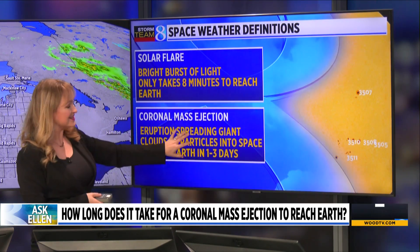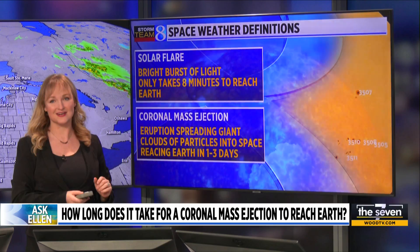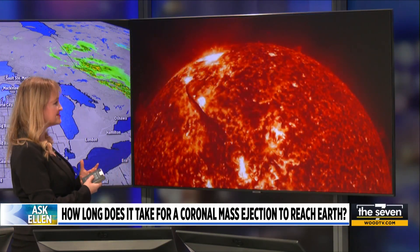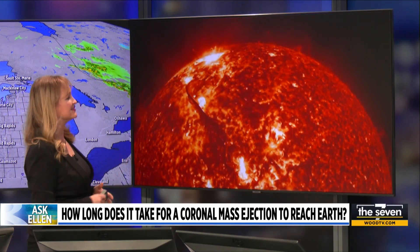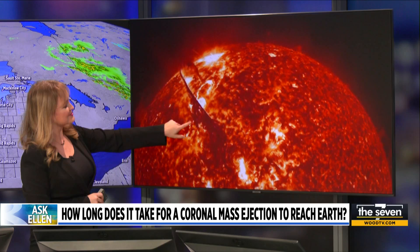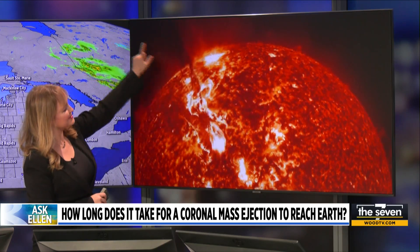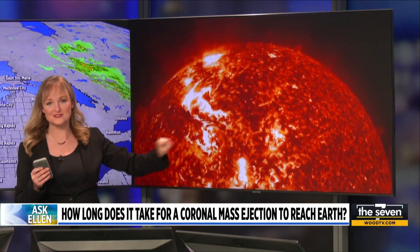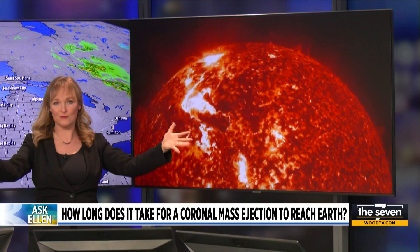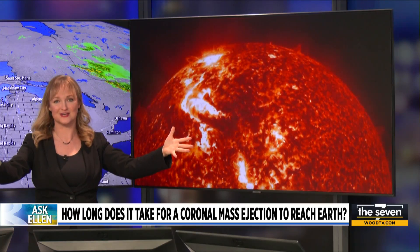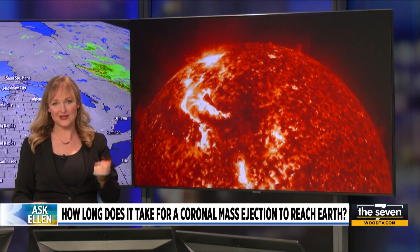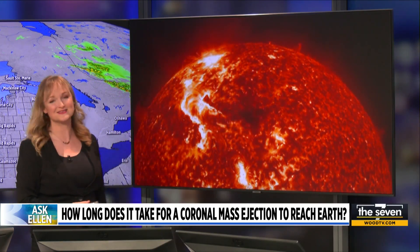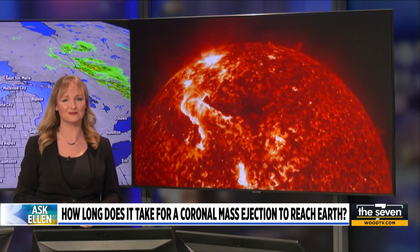The coronal mass ejection is what slams into Earth and can create the northern lights. Looking at the surface of the sun, oftentimes the solar flare will happen alongside the coronal mass ejection, but the flare is noticed in eight minutes, while the coronal mass ejection again takes about one to three days.